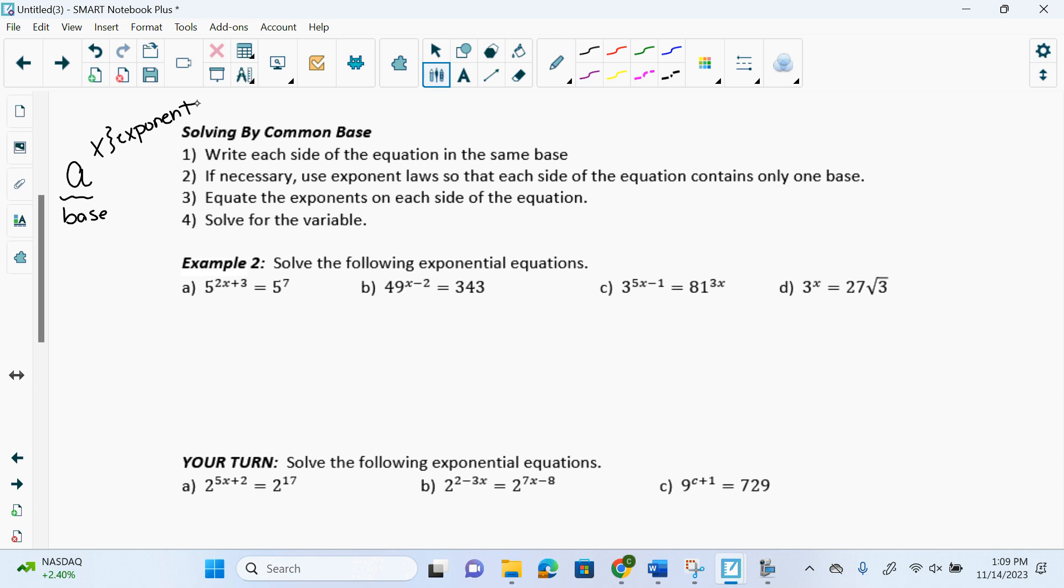So we have 5 to the 2x plus 3 equals 5 to the 7. Let's make it be something else. Let's say I have smiley face to the x equals smiley face to the 3. What can you tell me about x? x equals 3. Because if I have smiley face to the 3 equals smiley face to the x, x would have to be 3, right? Because they have to be the same in order for that to be a true statement. So if we can make our bases be the same, then we can say that our exponents must then equal in order for it to be a true equation.